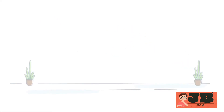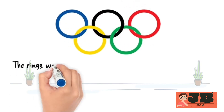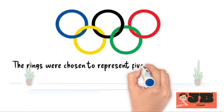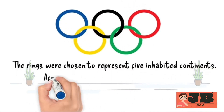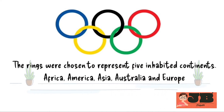Dear students, have you seen the 5 Olympic rings? The rings were chosen to represent 5 inhabited continents: Africa, America, Asia, Australia, and Europe.